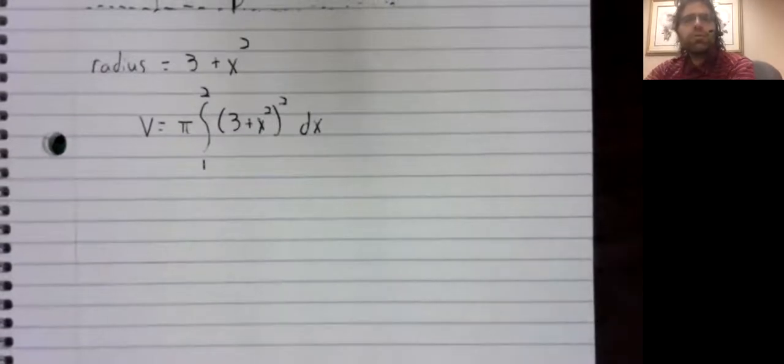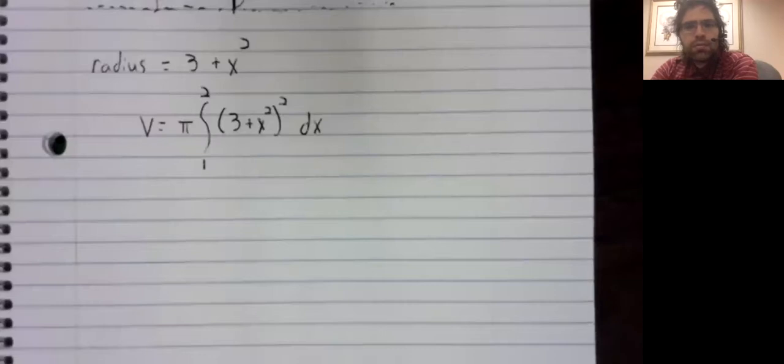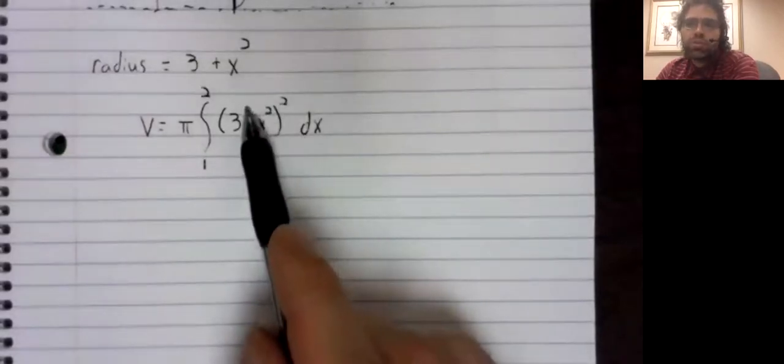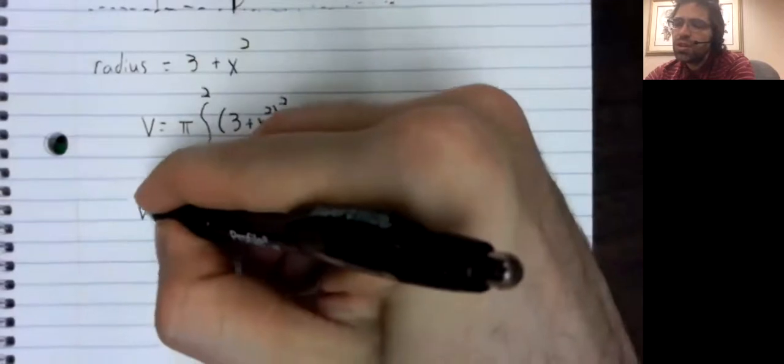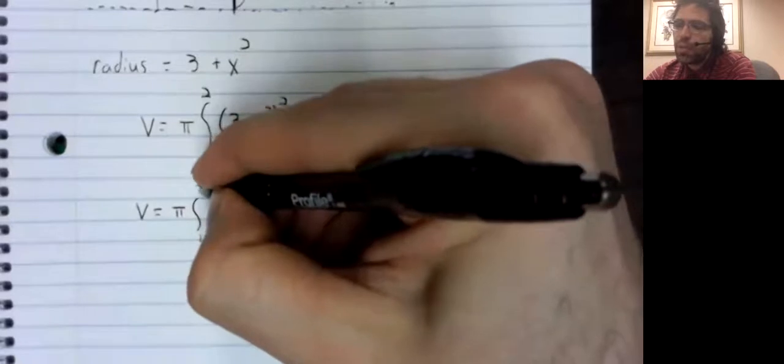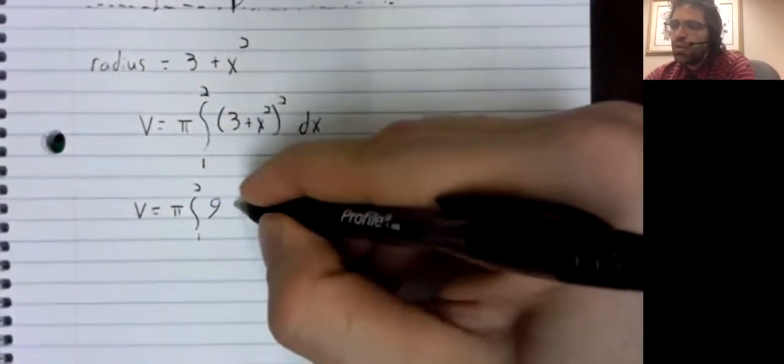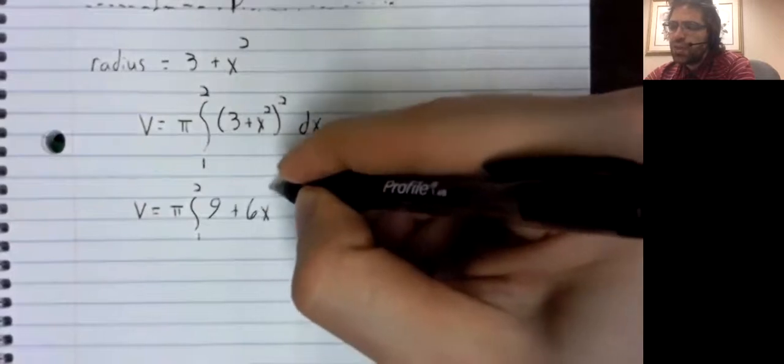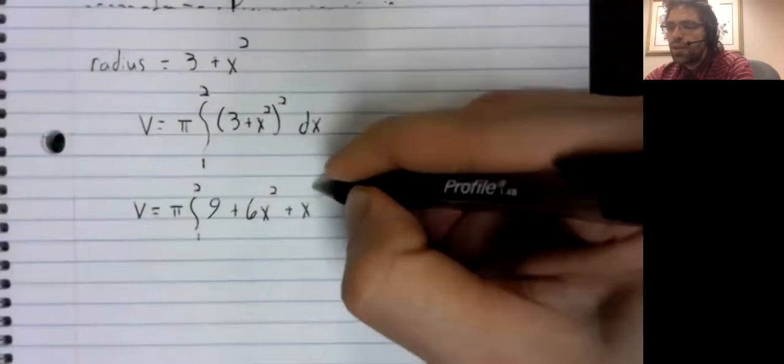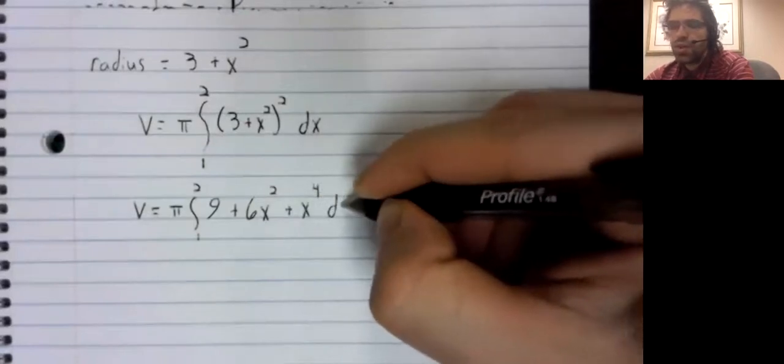How to take this integral? We don't seem to have the means to do a u substitution. What we could do is just foil this out first. The volume will then be the integral from one to two of nine plus six x squared plus x to the fourth.